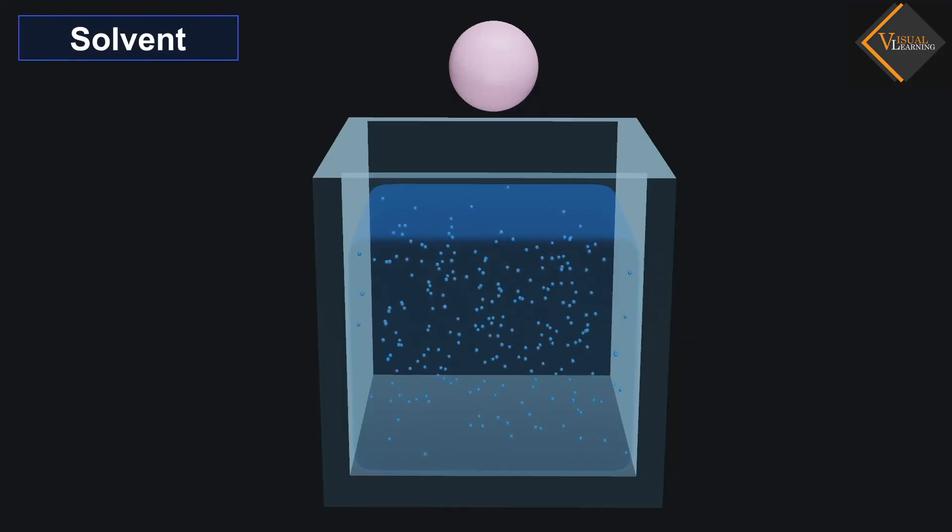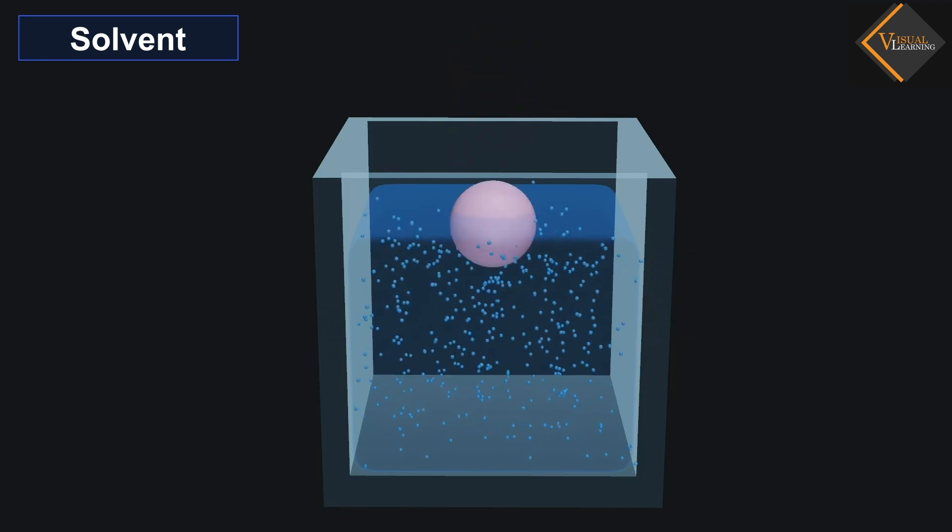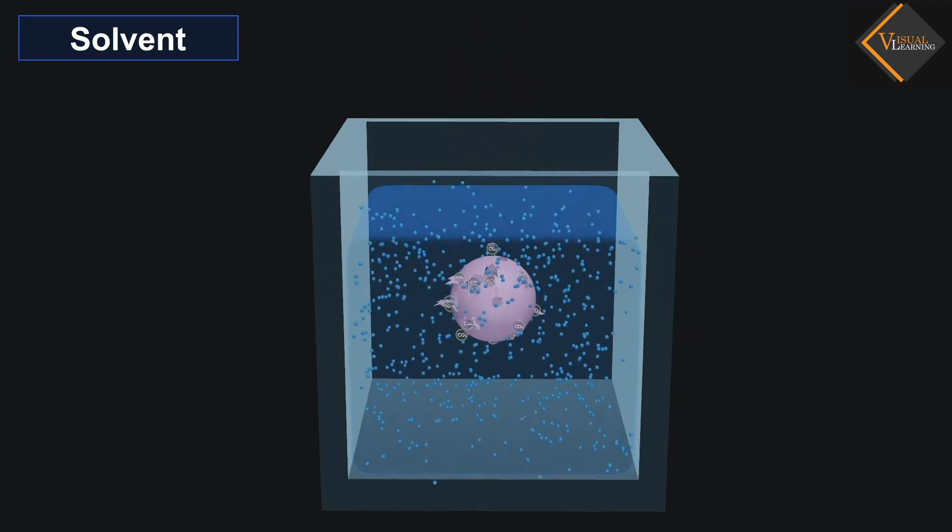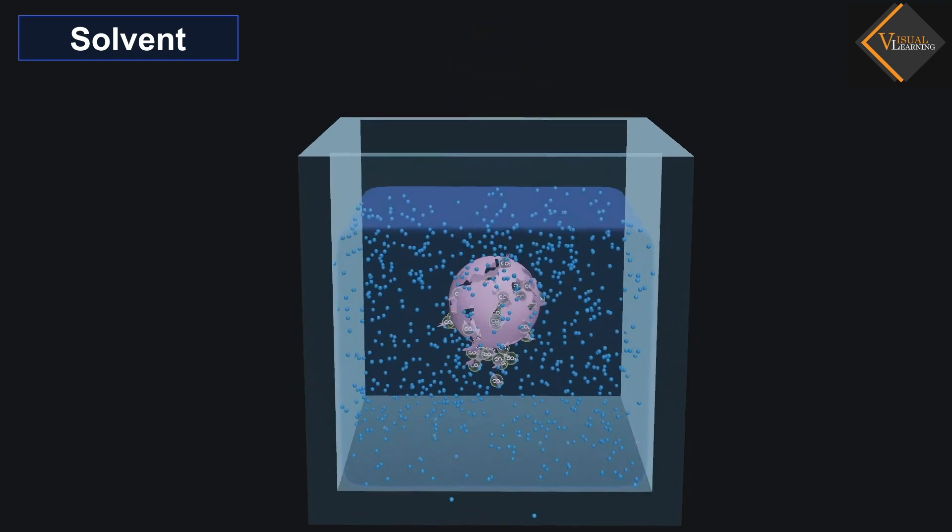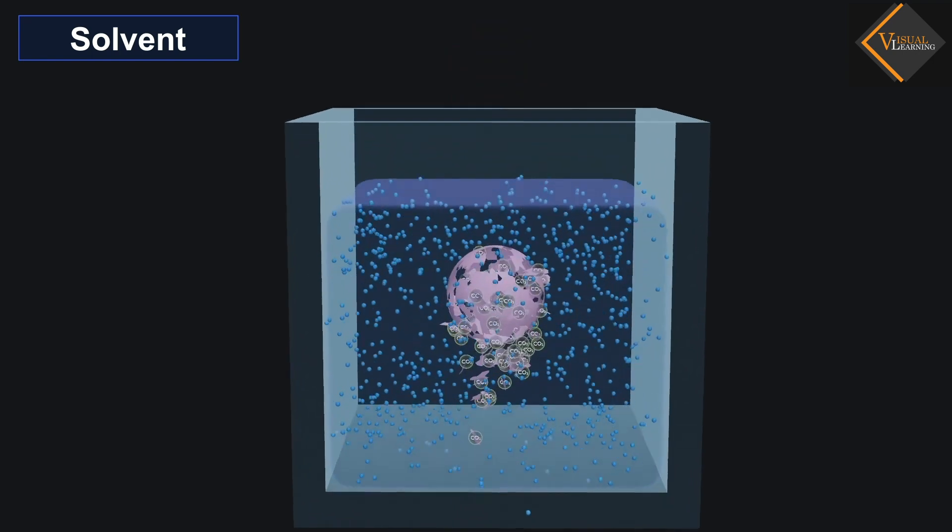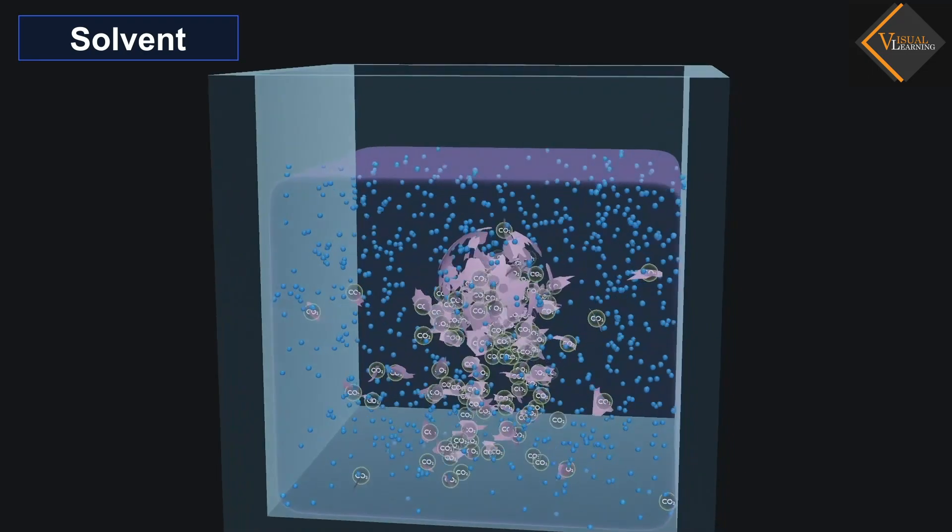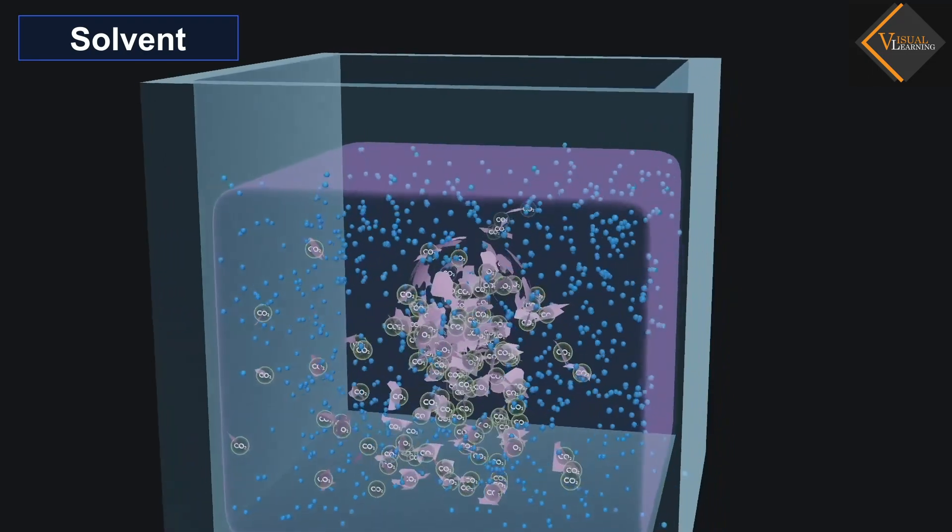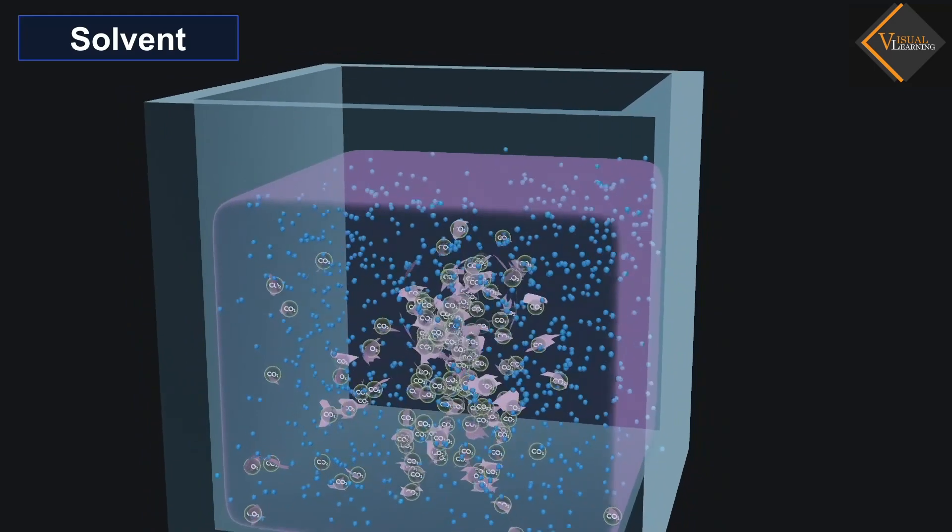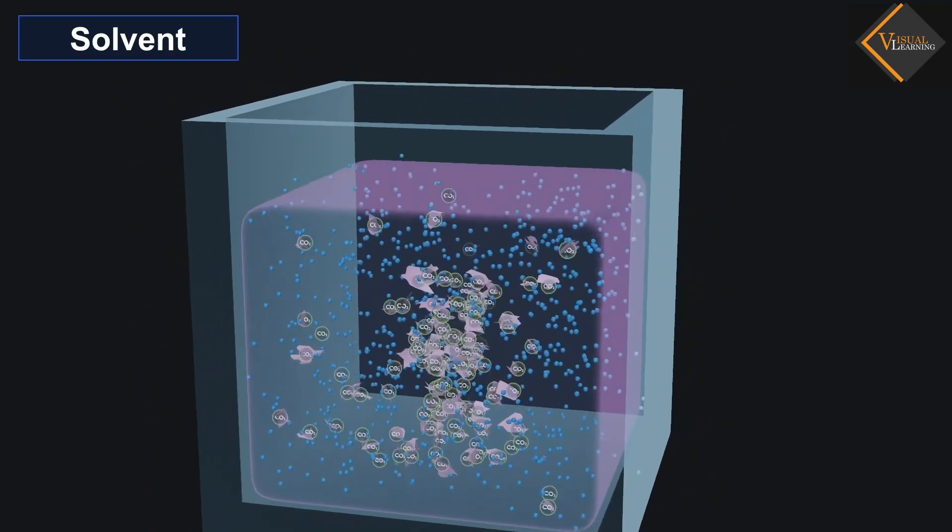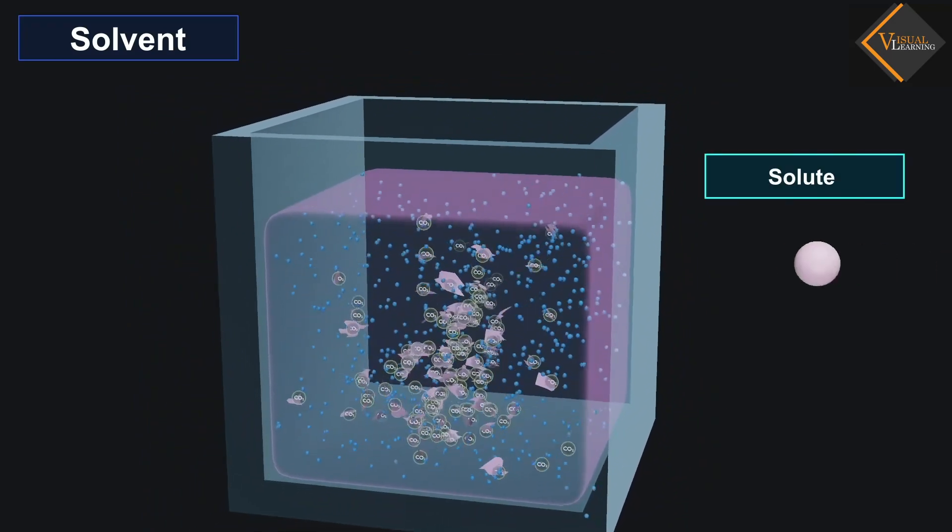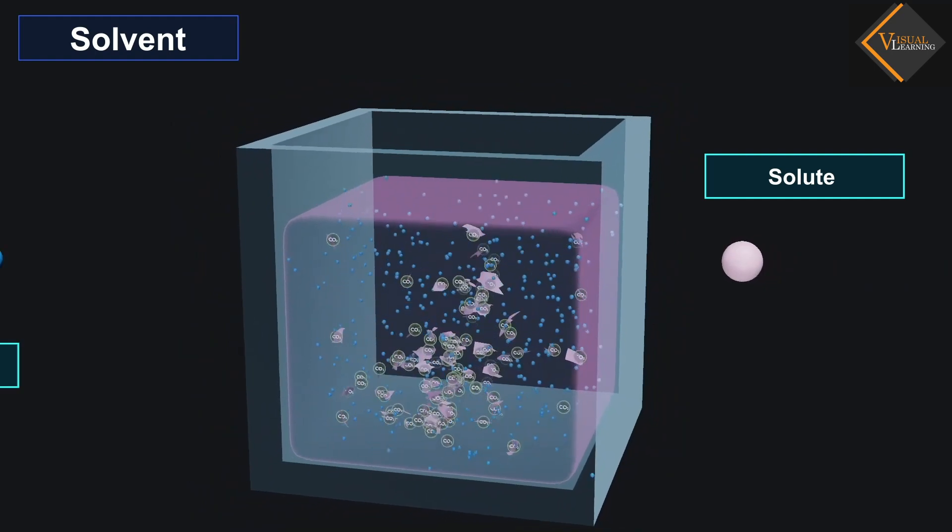Solvent: The component of a solution which dissolves the other component in itself is called the solvent. A solvent constitutes the larger component of the solution. For example, a solution of sugar in water is a solid in liquid. Here, sugar is the solute and water is the solvent.